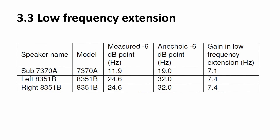Another advantage of having speakers or subwoofers close to the wall is that you can get a lower minus 6 dB point, simply because the reflected energy also adds to the direct signal. In this example, a speaker specified for a minus 6 dB point of 32 Hz under anechoic conditions can in the real world reach 25 Hz when placed close to the wall. Similarly, a subwoofer that usually plays down to 19 Hz can reach 12 Hz. You get lower bass and higher SPL with the speakers or subwoofer close to the wall.